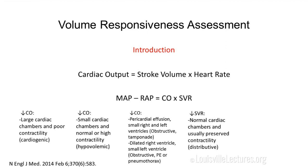Cardiac output equals stroke volume times heart rate, and mean arterial pressure equals cardiac output times systemic vascular resistance. From this formula we classify shock. Low cardiac output with large cardiac chambers and poor contractility: cardiogenic shock. Low cardiac output with small cardiac chambers and high contractility: hypovolemic shock. Low cardiac output with a pericardial effusion: tamponade. A dilated right ventricle can indicate obstructive shock due to PE or pneumothorax. Low systemic vascular resistance with normal cardiac chambers and preserved contractility: distributive shock, most often septic shock — it can also be an anaphylactic reaction.